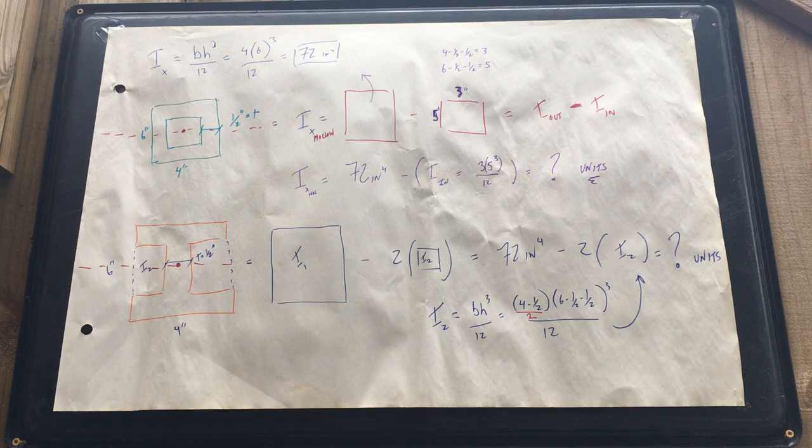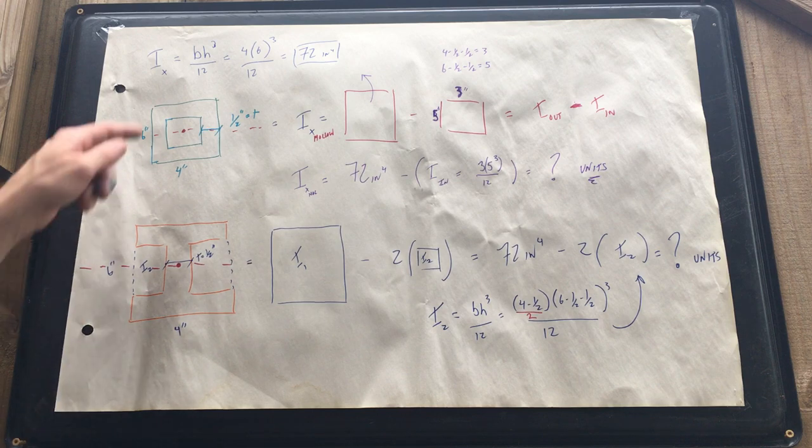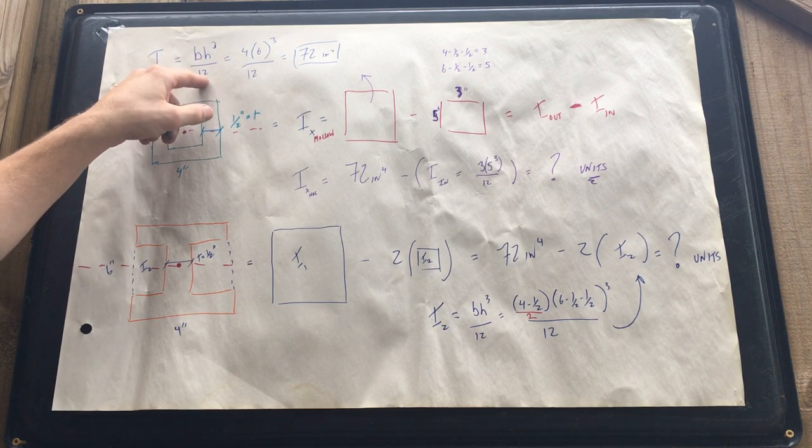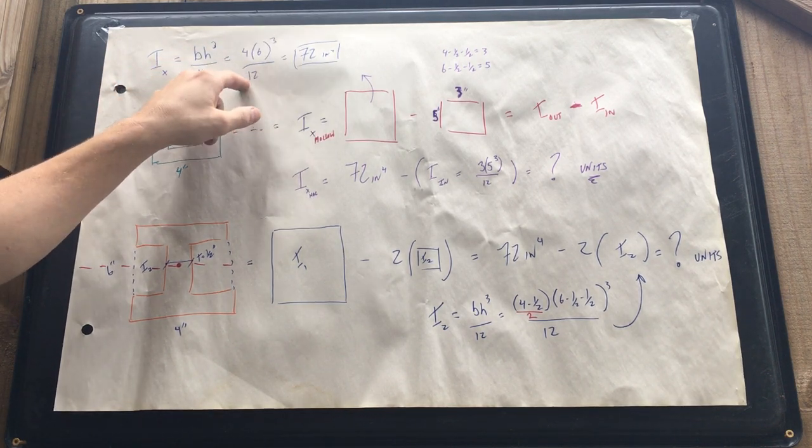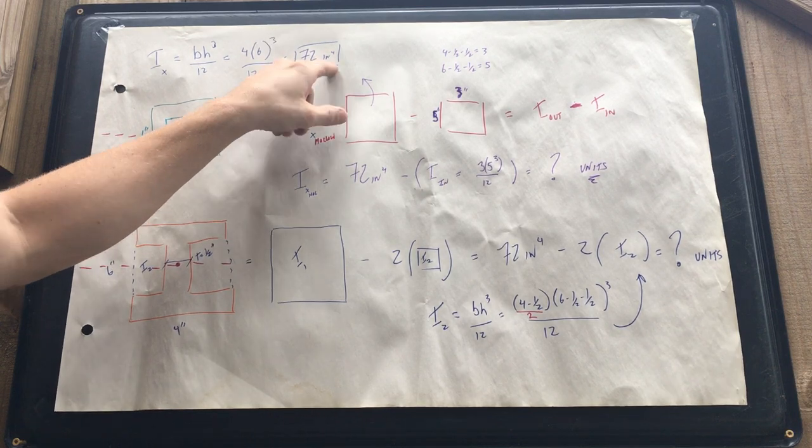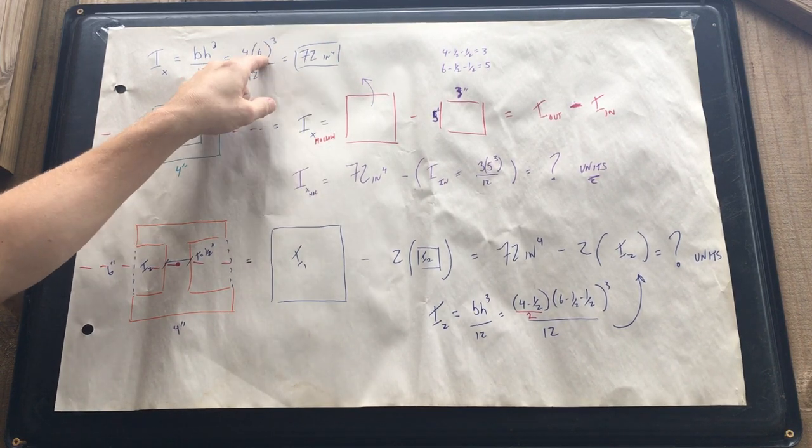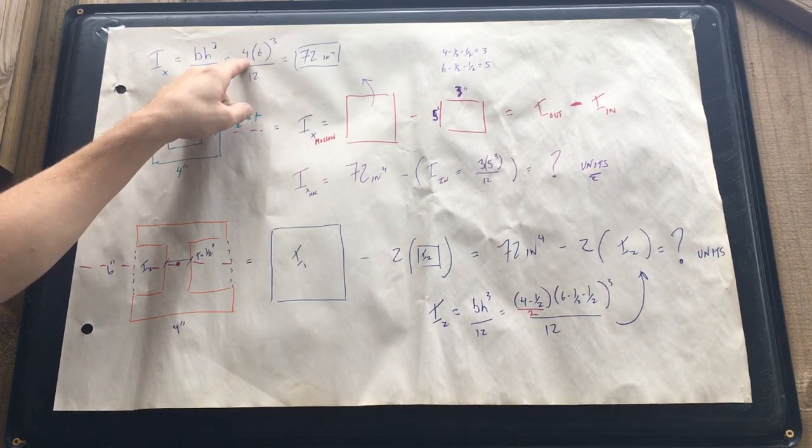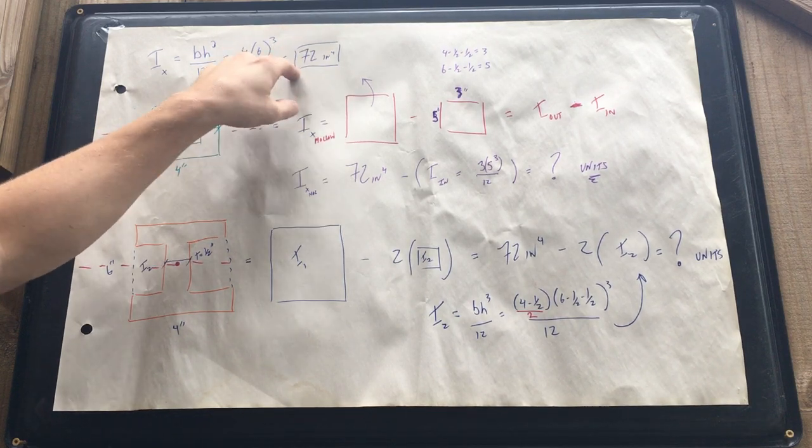When we calculate the inertia over the x-axis from the box beam, base height cubed over 12, we had 4 times 6 cubed over 12, equals 72 inches to the fourth. Keep in mind it's the fourth—we have inches cubed times another inch, that gives us inches to the fourth. Make sure you box in your answer.